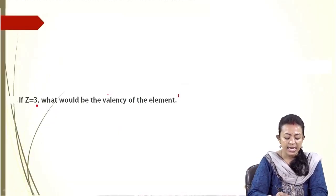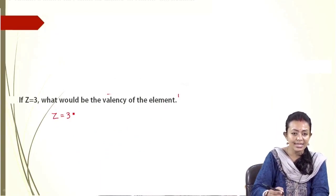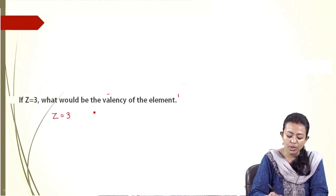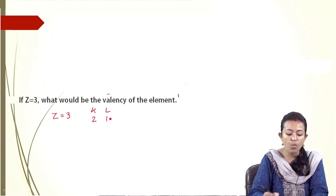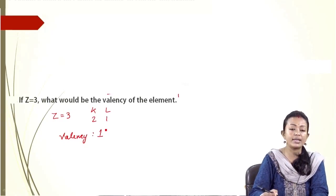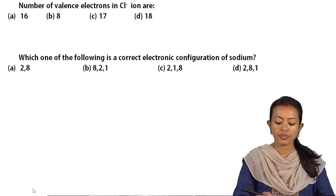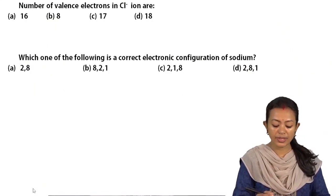If Z equals 3, what would be the valency of the element? Z equal to 3 is its atomic number. Writing the electronic configuration: K equal to 2 and L equal to 1. So the valency is going to be 1, because in the outermost orbit there is only 1 electron.